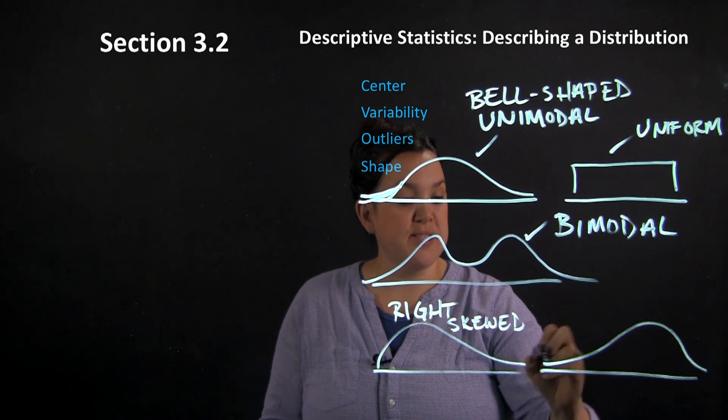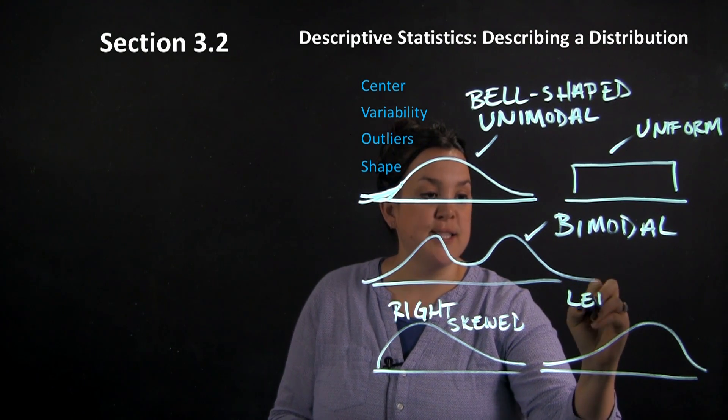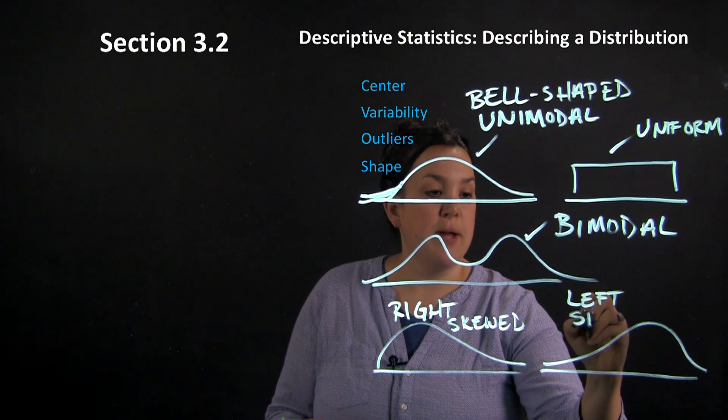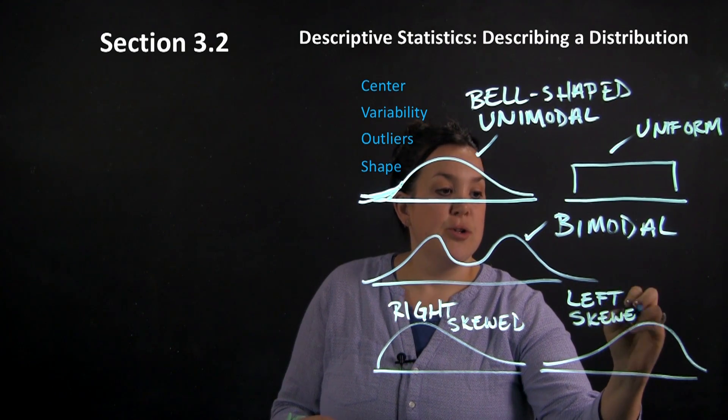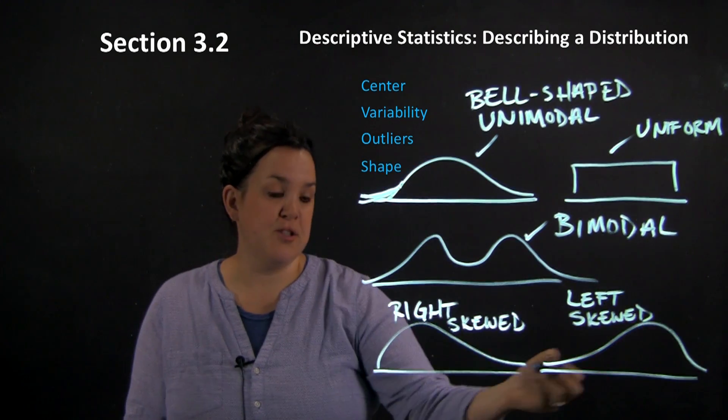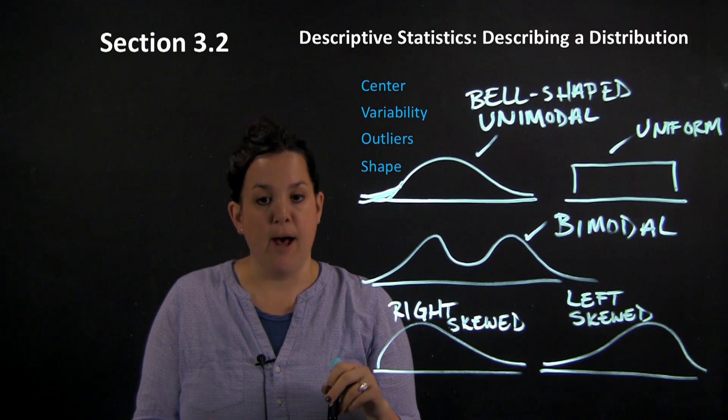This one, because the skewness is happening on the left hand side, would be described as left skewed. So the bulk of the data is on the right, but the skewness drag is happening on the left.